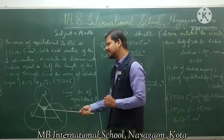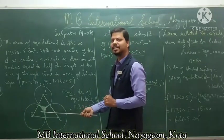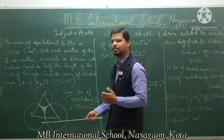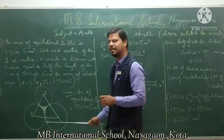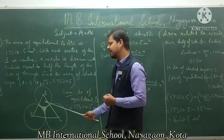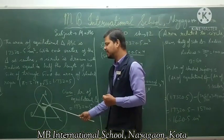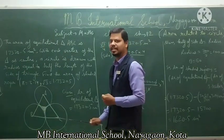The area of the shaded region is equal to the area of the equilateral triangle minus the area of the three sectors.